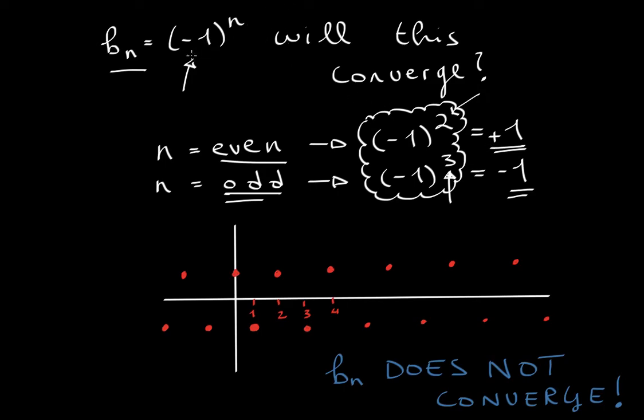We talked about how this sequence does not converge because every time you have an even value for n, you will have positive 1 as your output. Anytime your n is odd, you will have a negative 1, and we see this oscillation pattern.